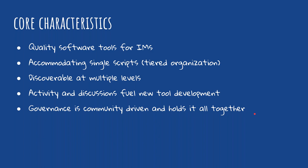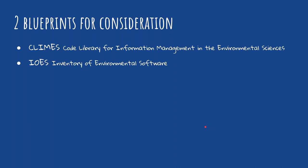We took those comments to heart and formulated two different blueprints. We're going to think about these at a relatively high level. We have CLIMS — these are working names — which stands for Code Library for Information Management in Environmental Sciences. This version is a bit more complex and heavy. And then we have IOS, the Inventory of Environmental Software, which is more of a catalog or inventory of environmental software IM tools.